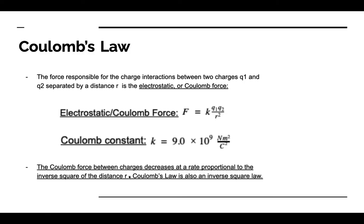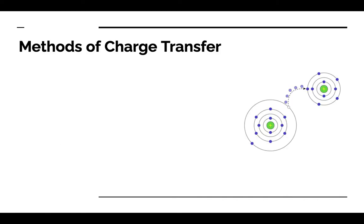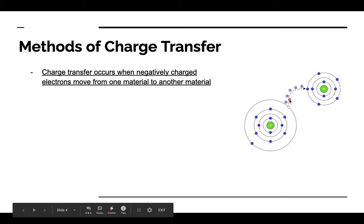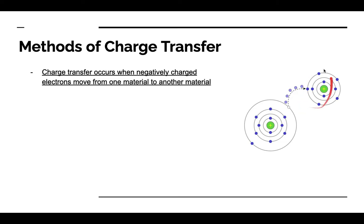This is strikingly similar because there are actually many analogies between electricity and gravity — the underlying theory behind classical electricity and classical gravity is more or less the same. Charge transfer occurs when negatively charged electrons move from one material to the next, moving from the valence shell of one atom to the valence shell of another atom.